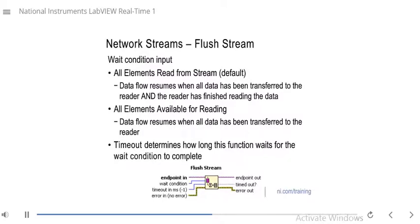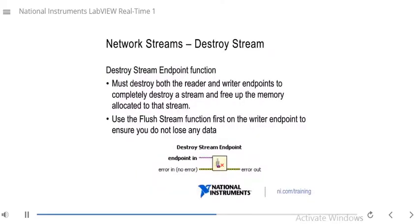The flush stream function also has a timeout that determines how long it will wait for the wait condition to complete. The last function to call on both the writer and reader ends is the destroy stream endpoint function. As a best practice, destroy the stream on both endpoints when done to free up allocated memory. Before destroying the stream, use the flush stream function on the writer endpoint first to ensure no data is lost — it guarantees all collected data is sent to the reader endpoint before destroying.